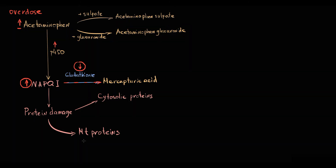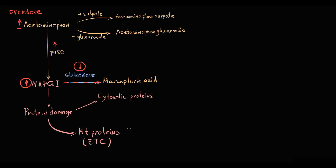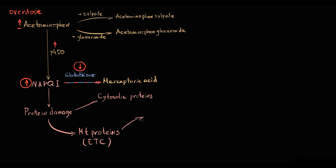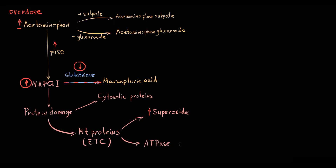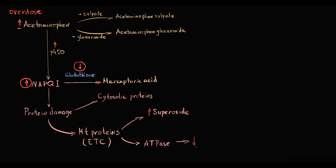This substance binds mostly to proteins of the mitochondrial electron transport chain, and damage to them results in leakage of electrons from the electron transport chain. These leaked electrons react with oxygen to form superoxide, which is a free radical. Additionally, N-acetylbenzoquinonimine binds to ATPase — the final complex in the electron transport chain — disrupting mitochondrial ATP production and thereby leading to bioenergetic failure of the cell.